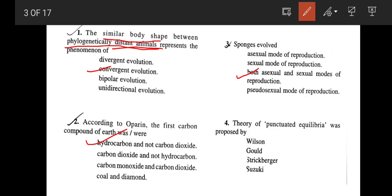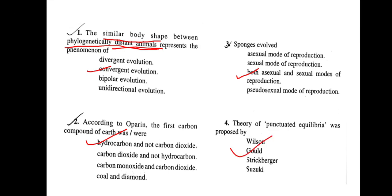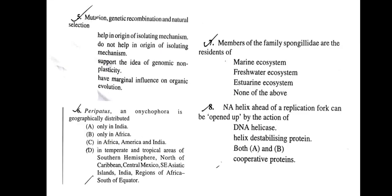The theory of punctuated equilibria was proposed by scientist Gould — option B.